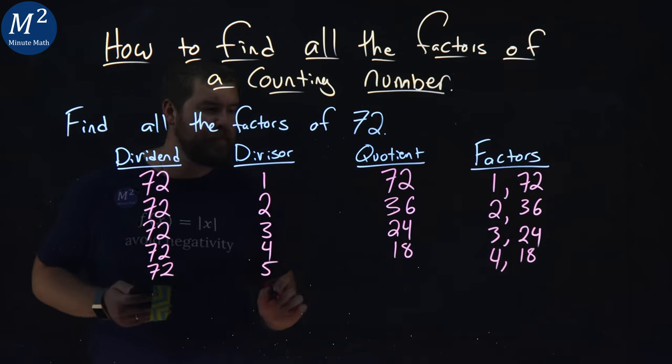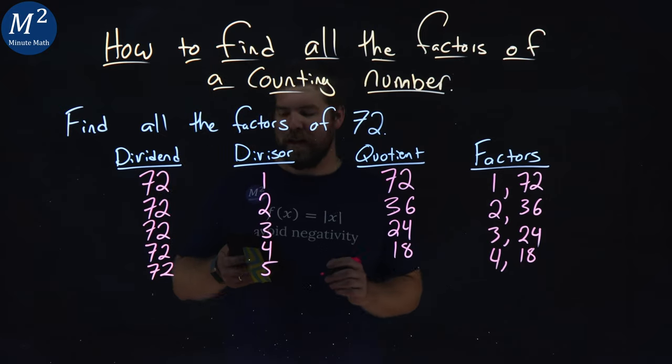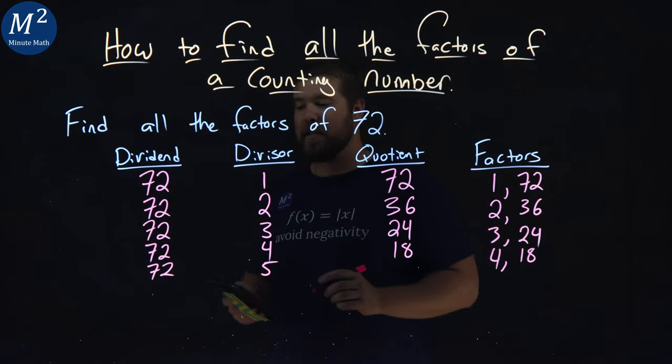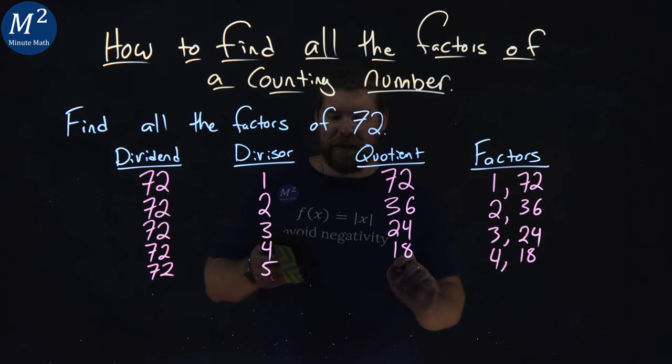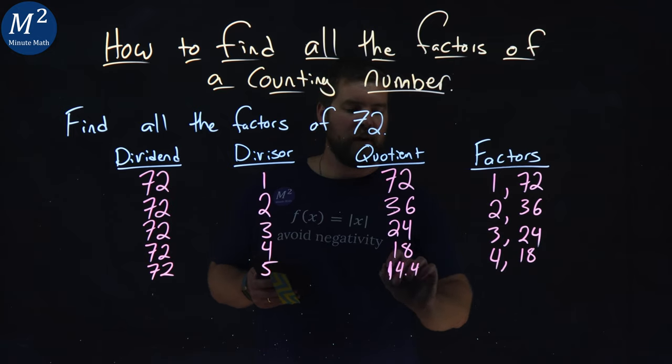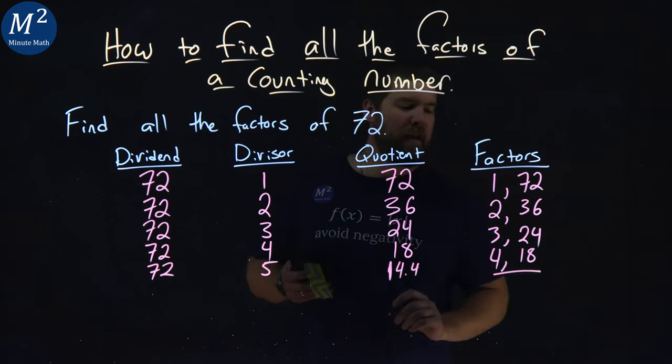72. We have 5 here. Does 5 go into 72? And the answer is no. 72 divided by 5 is 14.4. So we got nothing there.